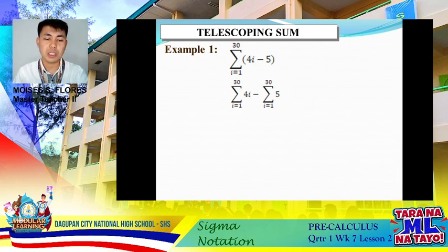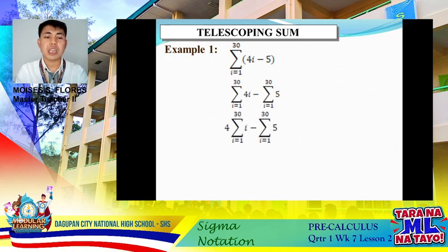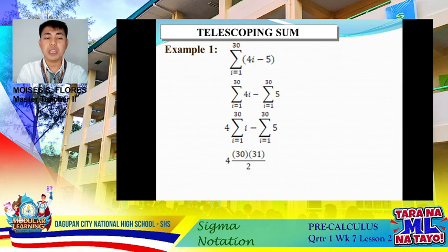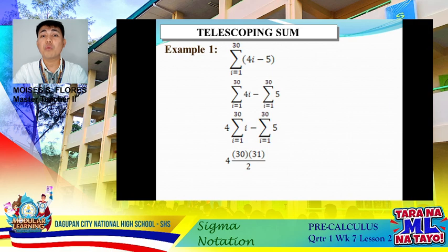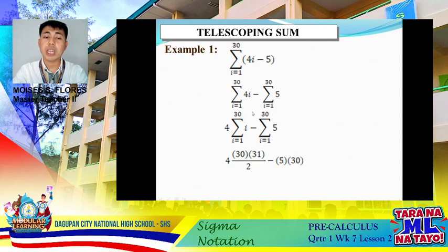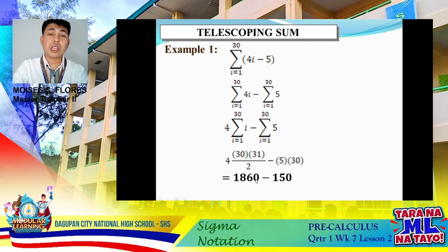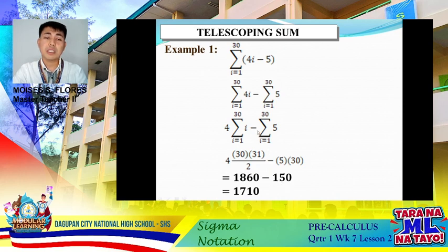Extracting the constant, we apply the formula: 4 × (30 × 31)/2 for the summation of i, and 5 × 30 for the constant. So 4 × 30 × 31 / 2 minus 5 × 30. Simplifying: 1,860 minus 150 equals 1,710. Therefore, the summation of 4i − 5 as i goes from 1 to 30 is 1,710.